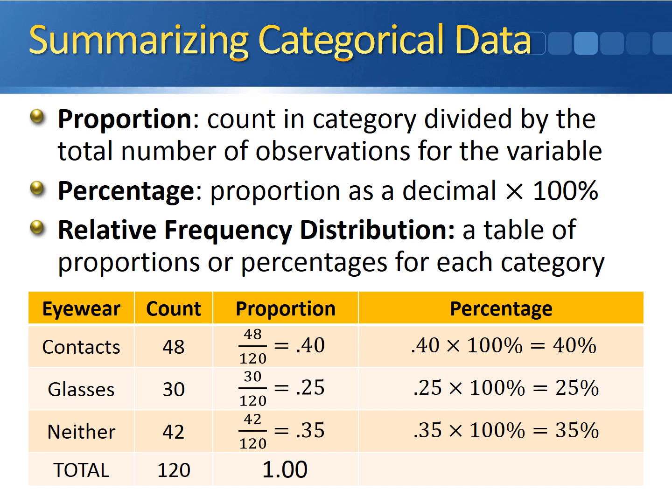Just like the proportions all had to add up to one, your percentages all have to add up to 100%. What we've just created is a relative frequency distribution, which is similar to the frequency distribution. A relative frequency distribution displays proportions or percentages for each category rather than the actual counts.